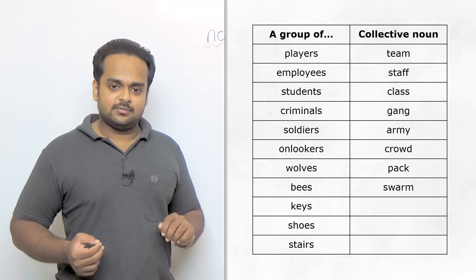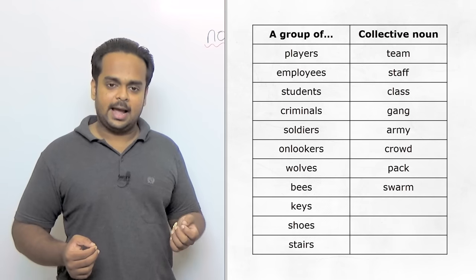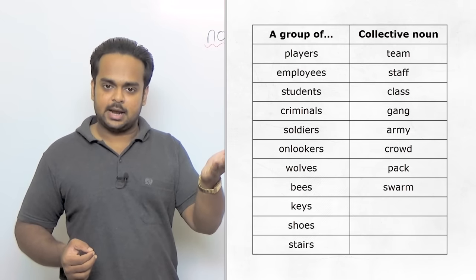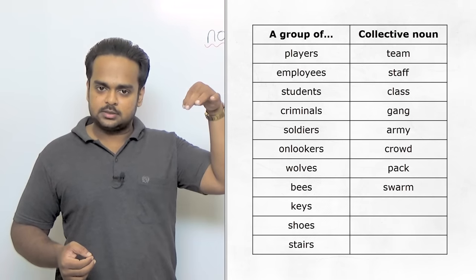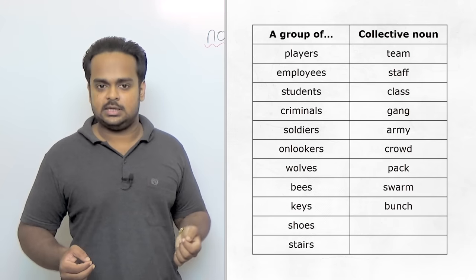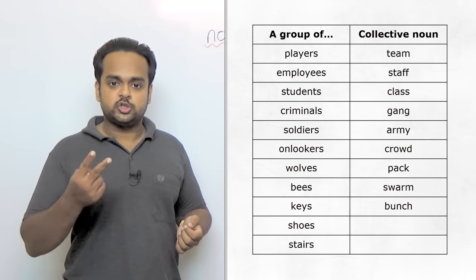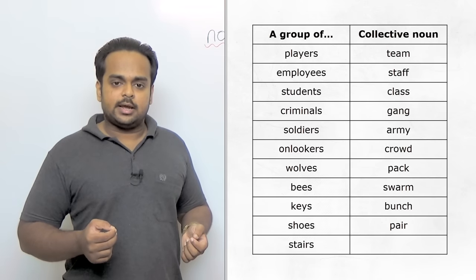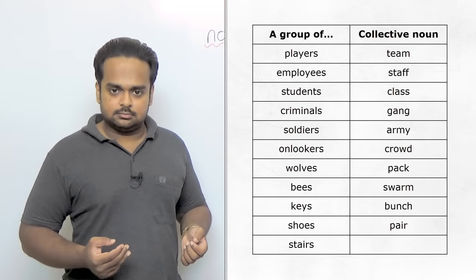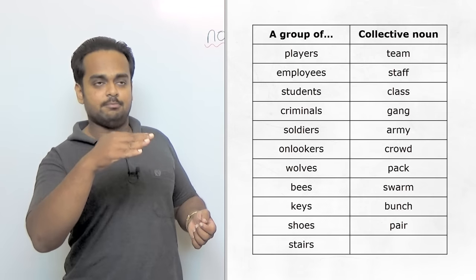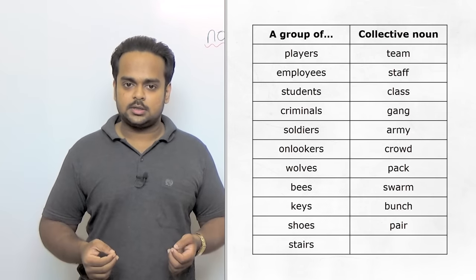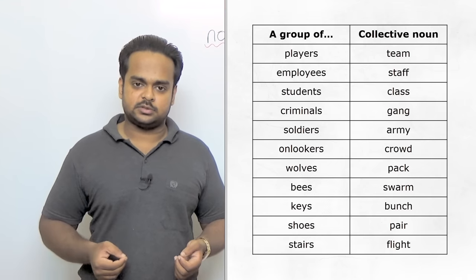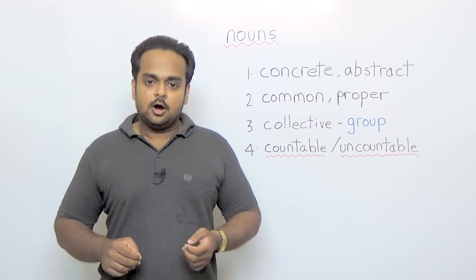There are also collective nouns for things. Like if I have five or six keys in my hand, do you know what we call that? We call it a bunch of keys. What about two shoes? A pair. And when there are stairs that you have to take from one floor of a building to the next floor, do you know what we call that? It's called a flight of stairs.